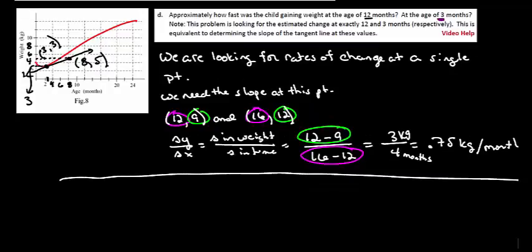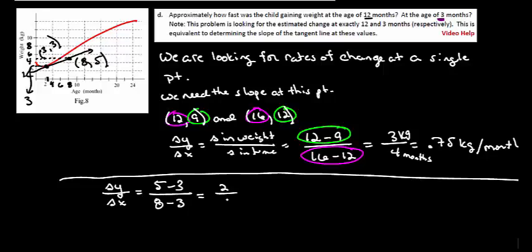So now the rest is just computation. Our change in our weight over our change in our time. Well the change in the weight is from 5 to 3 which is 2. So we increase by 2 kilograms over a time period of 5 months which is 8 minus 3. So we've got 2 kilograms over 5 months which reduces to 0.40 kilograms per month.